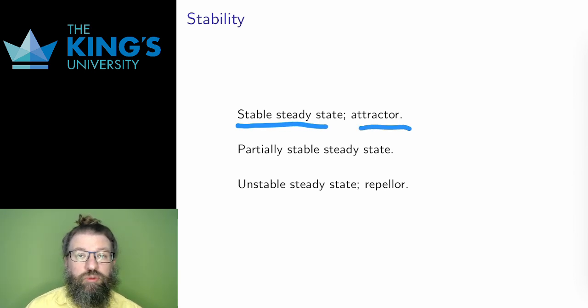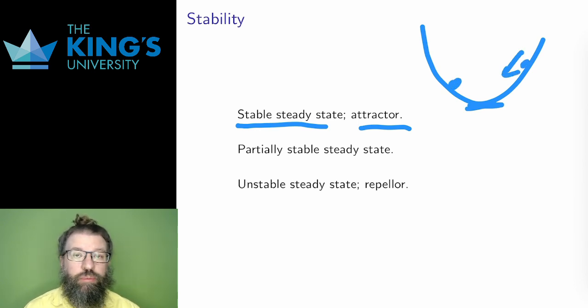A good mental image here is the bottom of a valley. At the very bottom, it is flat. However, if I put a ball a little bit away from the bottom, it will roll back down to the bottom, towards the steady state. Small changes from the steady state don't change the system very much. It's stable.